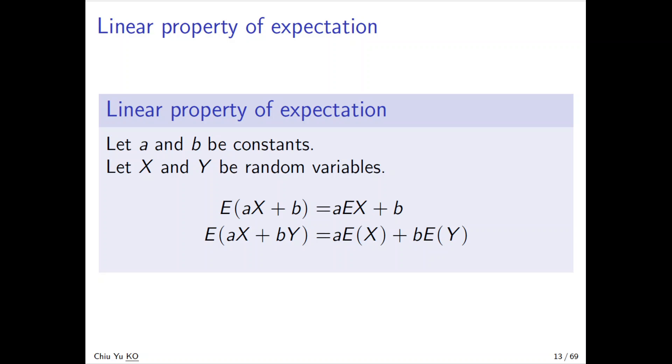Here we want to talk about some useful properties of expectation and variance. First is the linear property of expectation. Consider a and b are constants, so they are not random variables, and X and Y are random variables.